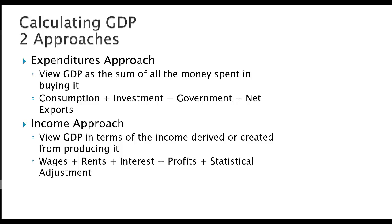There are two basic approaches we're going to be looking at for calculating GDP: the expenditure approach and the income approach. The expenditure approach looks at how much money is spent in buying GDP, broken down into four categories: consumption, investment, government spending, and exports. The income approach looks at income derived from production, broken down into five categories: wages, rents, interest, profits, and statistical adjustments. Both approaches should equal GDP.